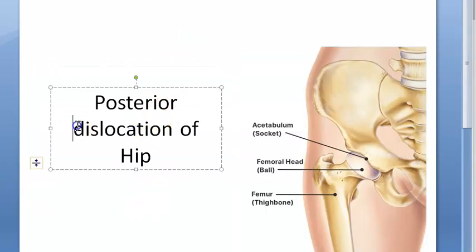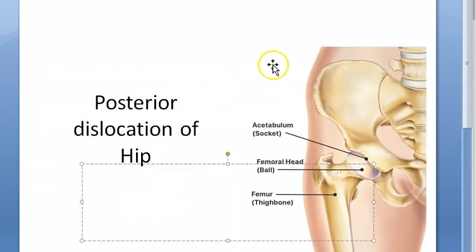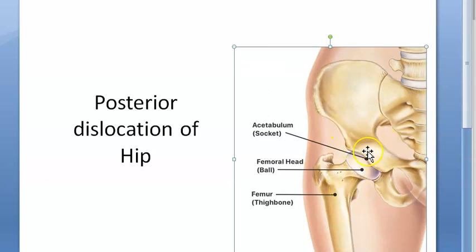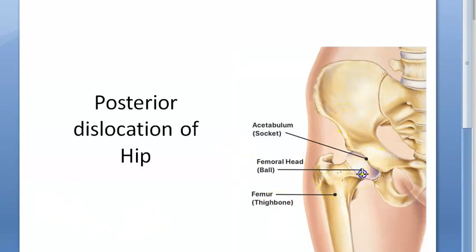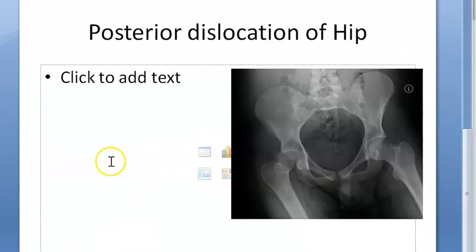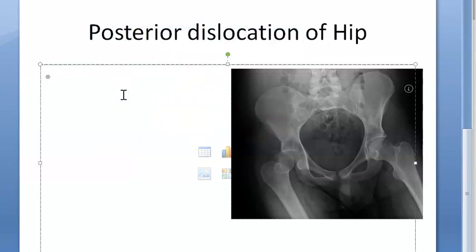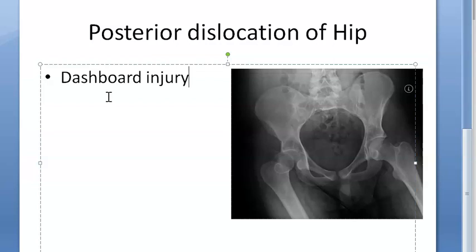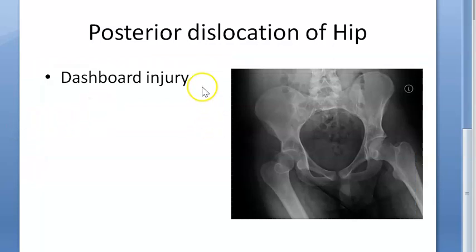In this video, let's look at the posterior dislocation of hip. The hip joint involves the femur and the acetabulum. In posterior dislocation, the femoral head goes posteriorly — backwards. This is more common than the anterior dislocation, which is why we're focusing on it. It is also called dashboard injury because in a road traffic accident, the knee can hit the dashboard and the impact is transferred to the shaft of femur, causing a posterior dislocation.